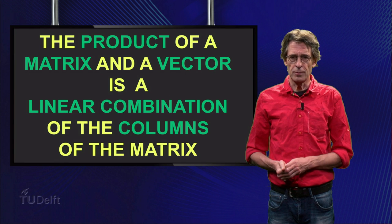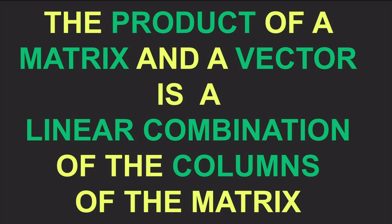Let me repeat the definition. The product of a matrix and a vector is a linear combination of the columns of the matrix with the elements of the vector as coefficients.